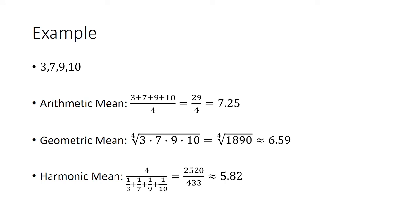As you can see, the harmonic mean is the smallest of the three means. The geometric mean is the next smallest, and the arithmetic mean is the largest.